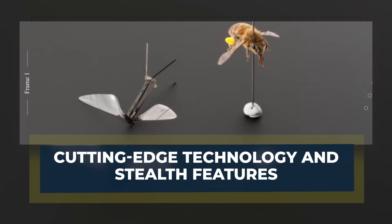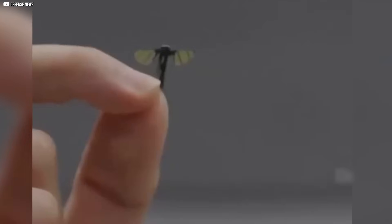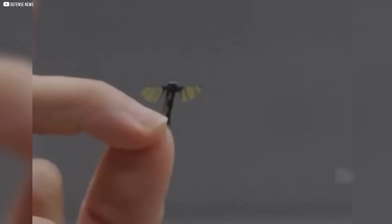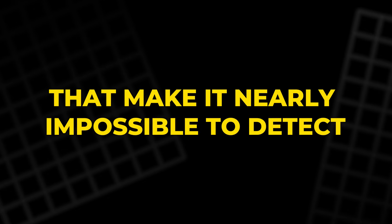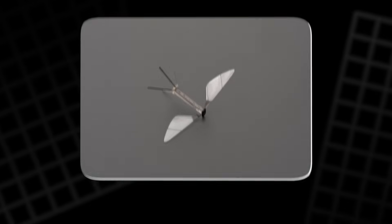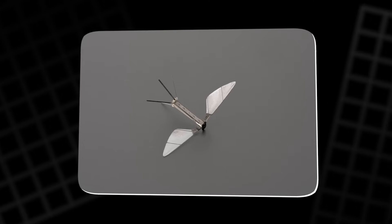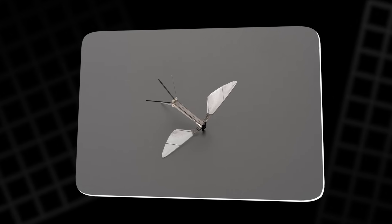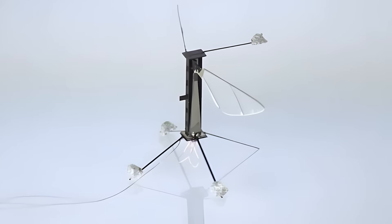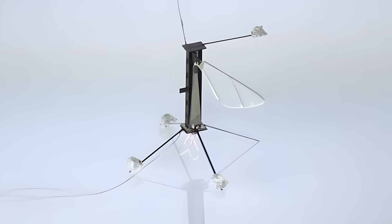What truly sets the NUDT Mosquito apart is its blend of advanced technology and stealth features that make it nearly impossible to detect. Despite its small size, it's equipped with a suite of sensors and components that allow it to gather and transmit data with pinpoint accuracy.